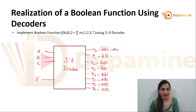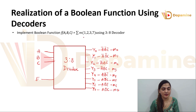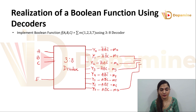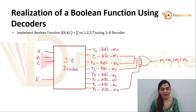So I am representing them as m0, m1, m2, m3, m4, m5, m6, m7. The function is summation of minterms 1, 2, 3 and 7. So we are going to take minterm 1, minterm 2, minterm 3 and minterm 7, and because it is a summation of all these minterms we are going to use an OR gate. This OR gate gives the summation of minterms 1, 2, 3 and 7 — this is how you implement the Boolean function using the 3-to-8 decoder.